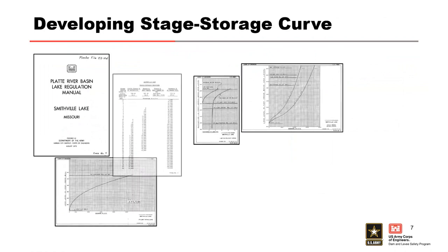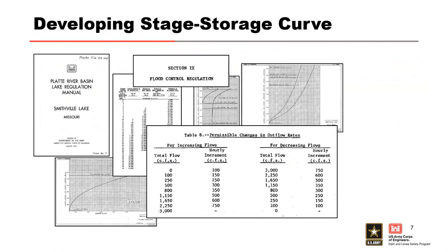Reservoir storage curves and discharge rating curves can typically be found in water management documents and design documents. Most projects have rating curves for spillways — both gated and ungated — and also outlet works, which includes sluice gates and low-flow outlets. It's very common to assume that the outlet works are not working for large floods. You'll also want to think about multiple types of spillways, such as an auxiliary spillway and a main spillway, and definitely consider overtopping.